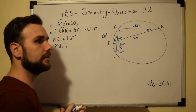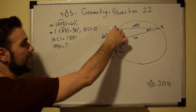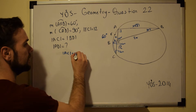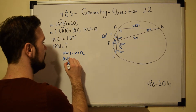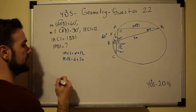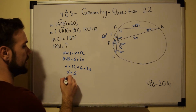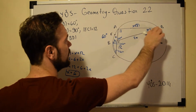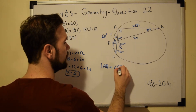Now we have every piece of information needed to find X, by using AC = BD. AC is X + 12, and BD is 6 + 2X. Equalizing them: X + 12 = 6 + 2X, so X = 6. Now that we know X = 6, we can find AD. AD is equal to 6√3. That is the answer to this question.